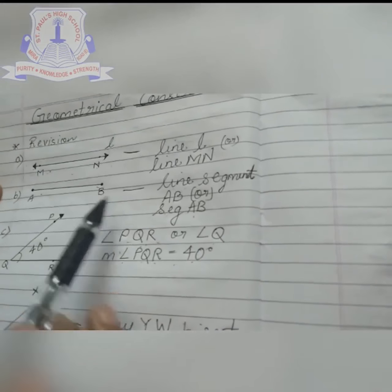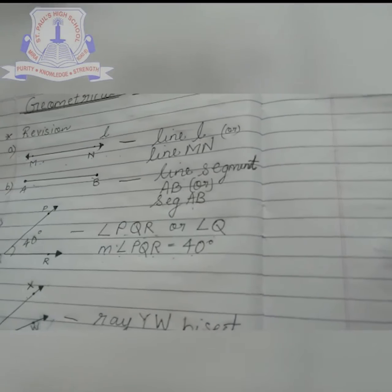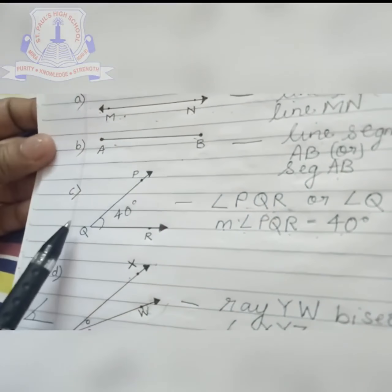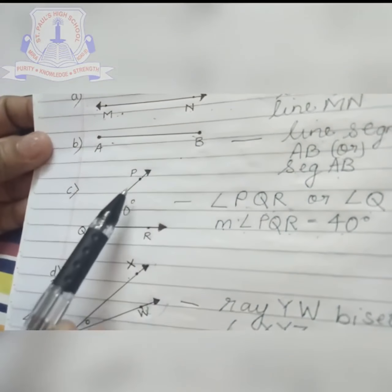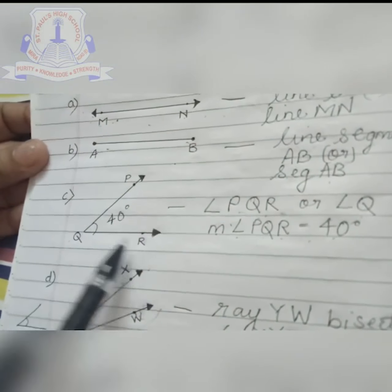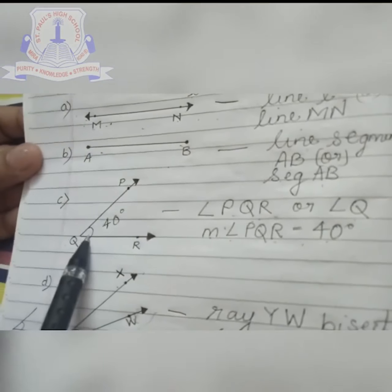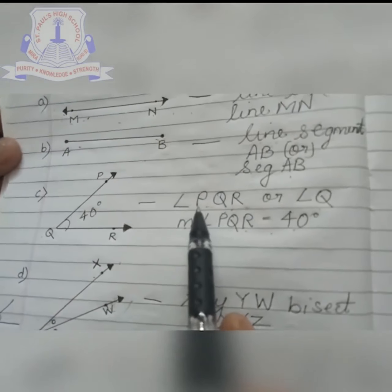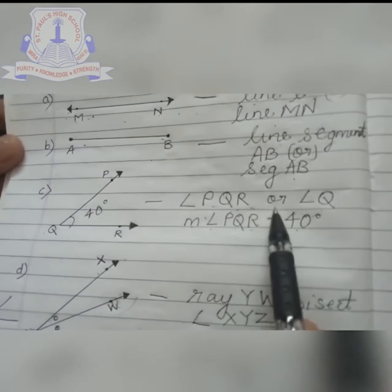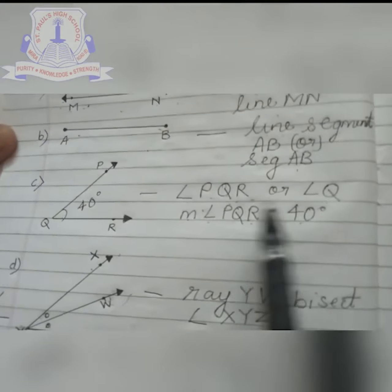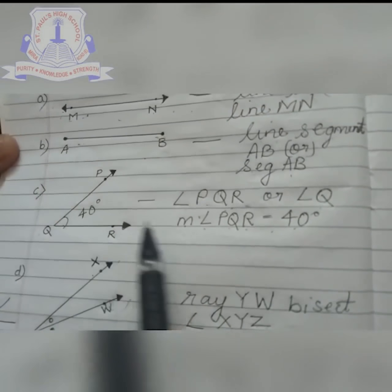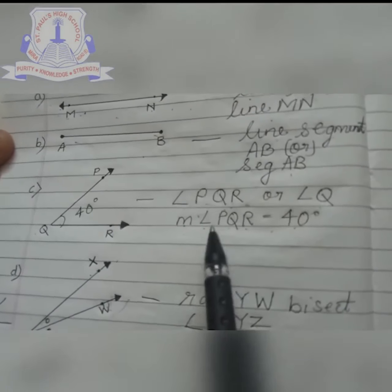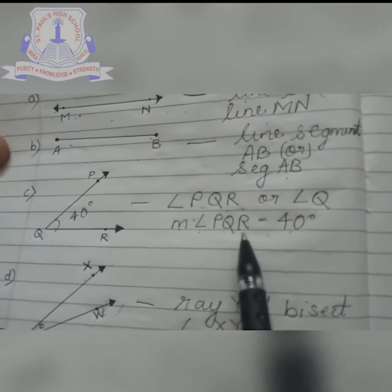The third figure shows angle PQR. The measurement of angle PQR is 40 degrees. The name of this figure can be written in two ways: angle PQR or angle Q. If we have to add the measurement, we write M — meaning measurement — angle PQR is equal to 40 degrees.